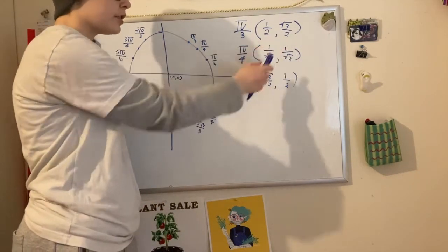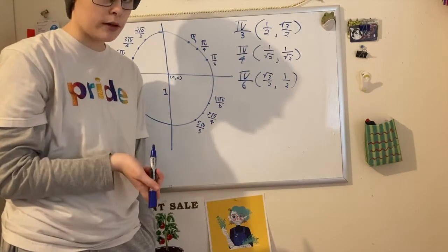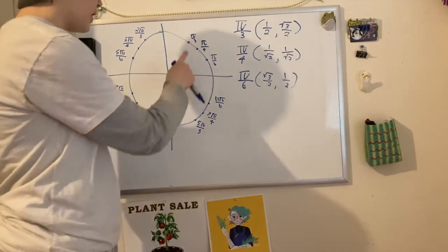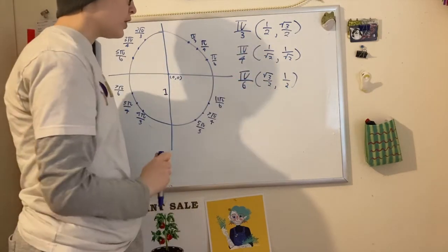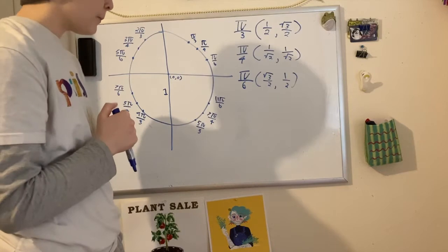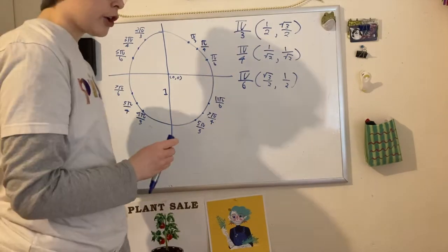Since these two coordinates are really similar to each other, you should not mess them up. You can think about it that this guy is higher up on the circle, so his x value is less, and 1 is less than the square root of 3. You can also think about it, the way I think about it,